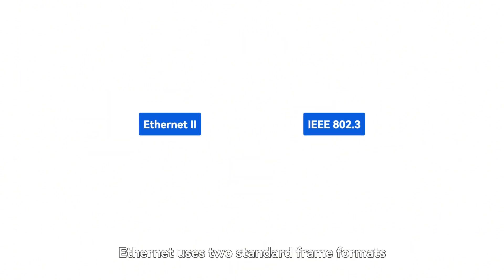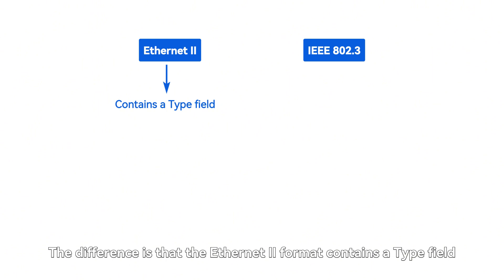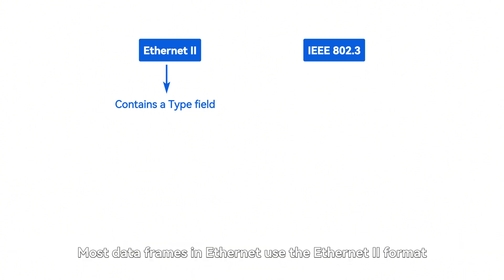Ethernet uses two standard frame formats. The first is the earliest proposed DIX-V2 format, the Ethernet-2 frame format. The second is the IEEE 802.3 format proposed in 1983. The difference is that the Ethernet-2 format contains a type field, which identifies the upper layer protocol to which the Ethernet frame will be sent for processing. Most data frames in Ethernet use the Ethernet-2 format.